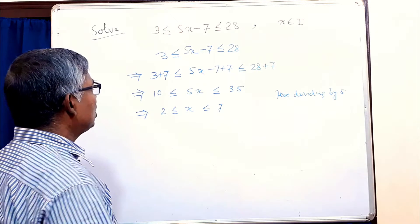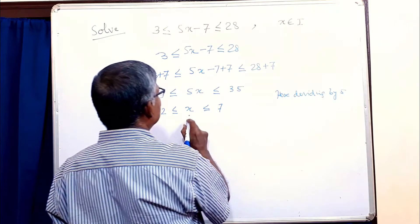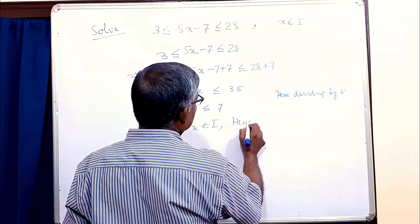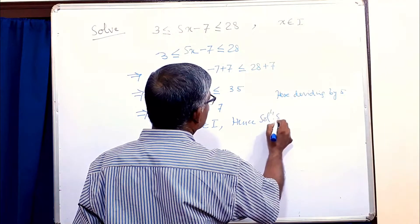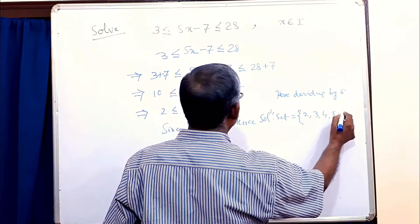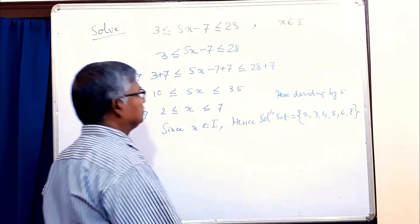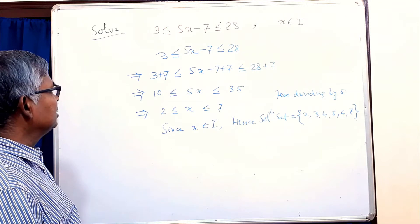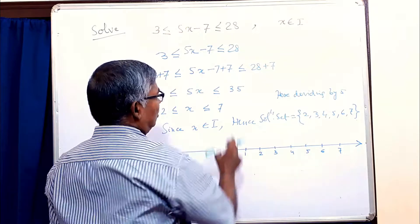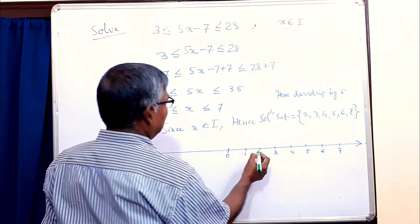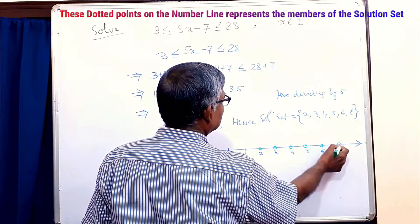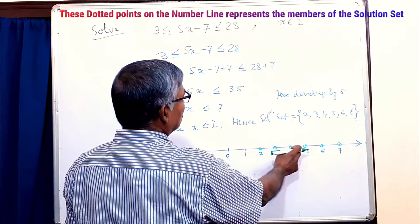So the solution set — since x belongs to I, that is integers — the solution set is {2, 3, 4, 5, 6, 7}. Let us represent the solution set graphically. If we put the solution set on the number line, we get the dotted points 2, 3, 4, 5, 6, 7. These points are the solution set of the inequation.